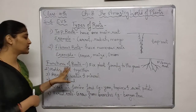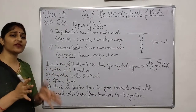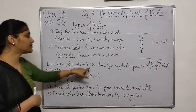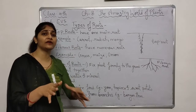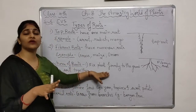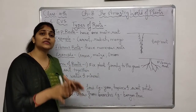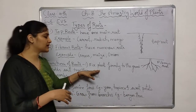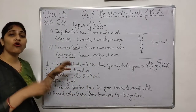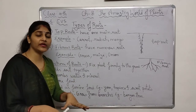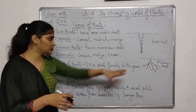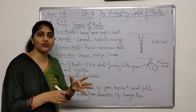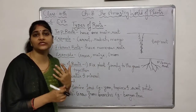Now let us see the functions of roots. There are several functions. The first function is to fix the plant firmly onto the ground — roots help the plant stay in the ground. Roots also hold the soil together, which prevents soil erosion. Like when there is very heavy rain, the soil does not wash away because of roots.